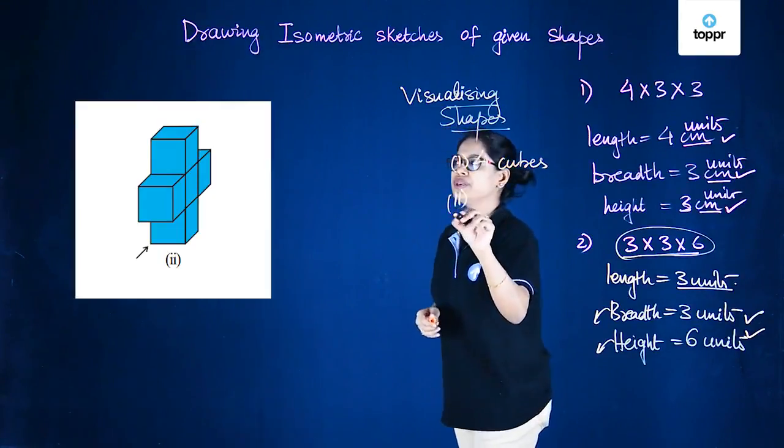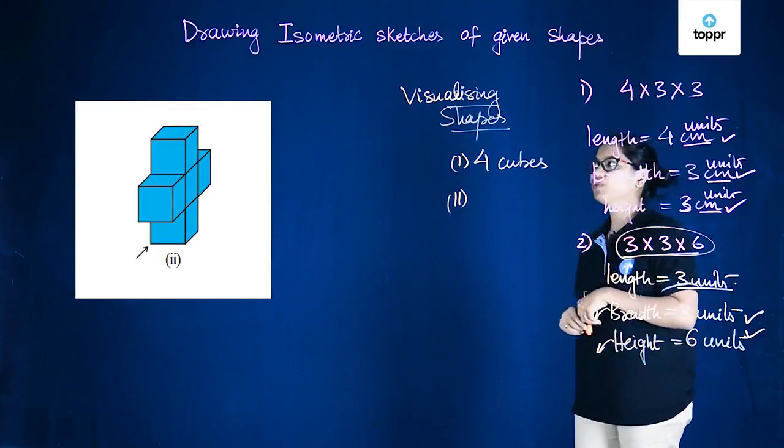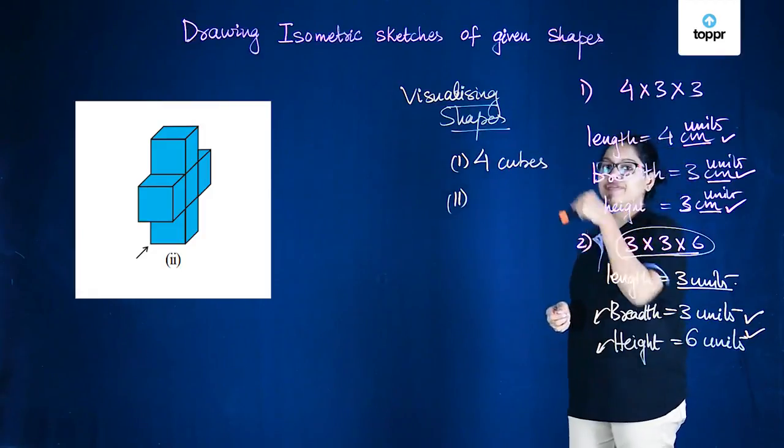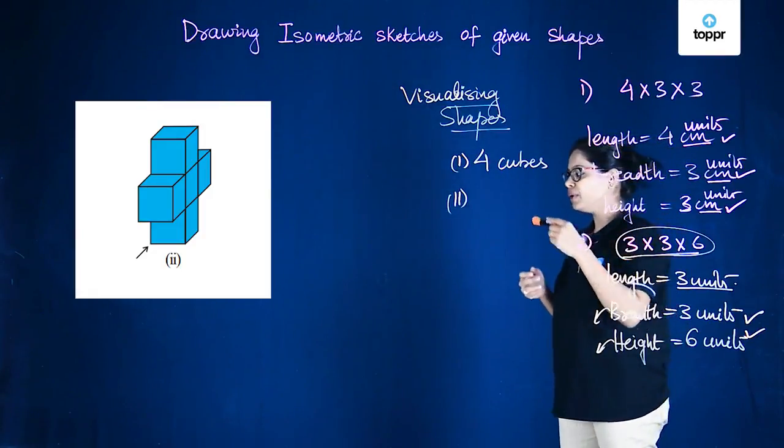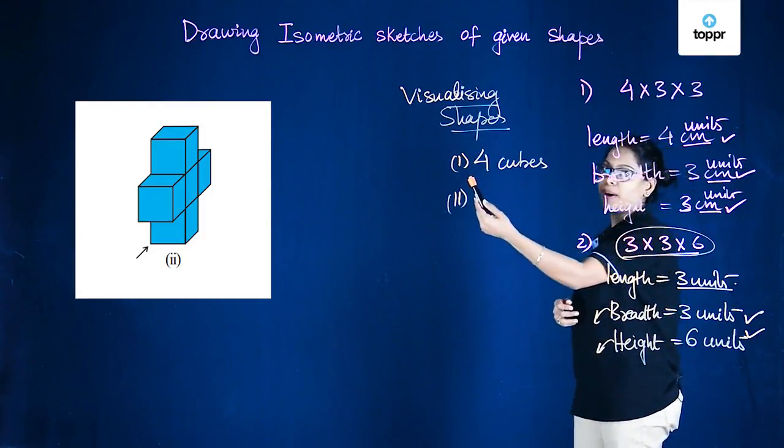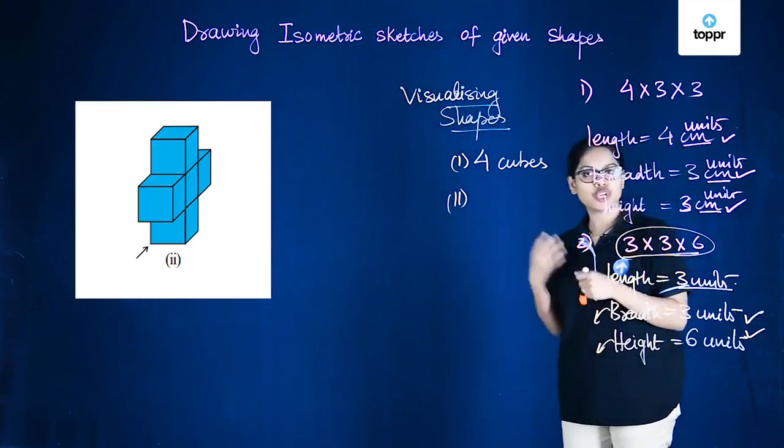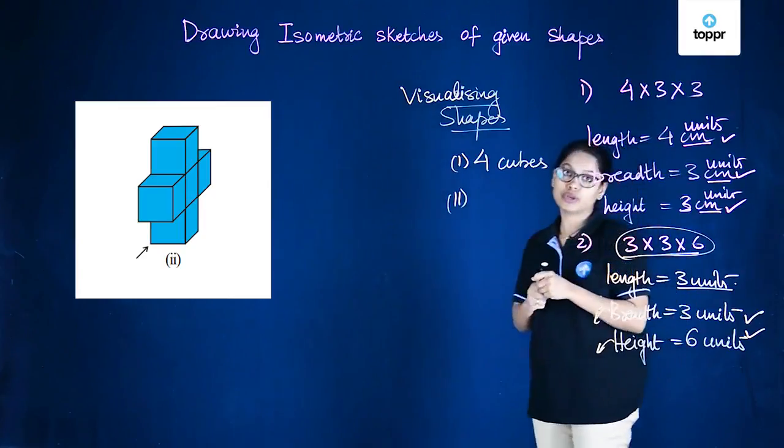Similarly, here's another shape. Now for this shape if you would like to count the cubes, here's 1, 2, 3 and 4. Four are clearly visible but then there's one part of another cube that's partially visible. So we can safely say that this shape has got 5 cubes.